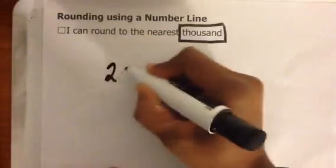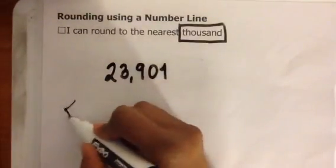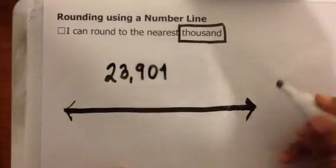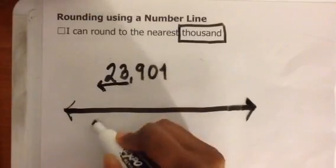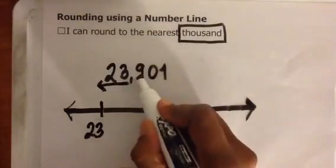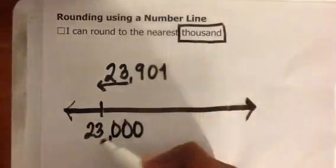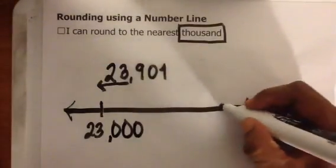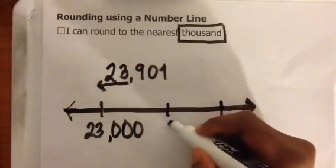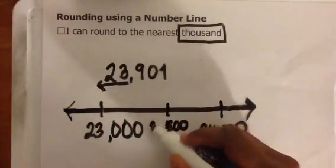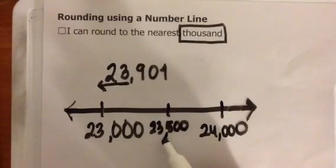Let's round 23,901 to the nearest thousand. Make my number line. Ones, tens, hundreds, thousands. Everything to the left gets left, and everything to the right becomes a zero. I'm rounding to the nearest thousand, so 23,000 plus 1,000 is 24,000. Halfway between 0 and 1,000 is 500. Everything to the left gets left. So: 23,000, 23,500, 24,000.